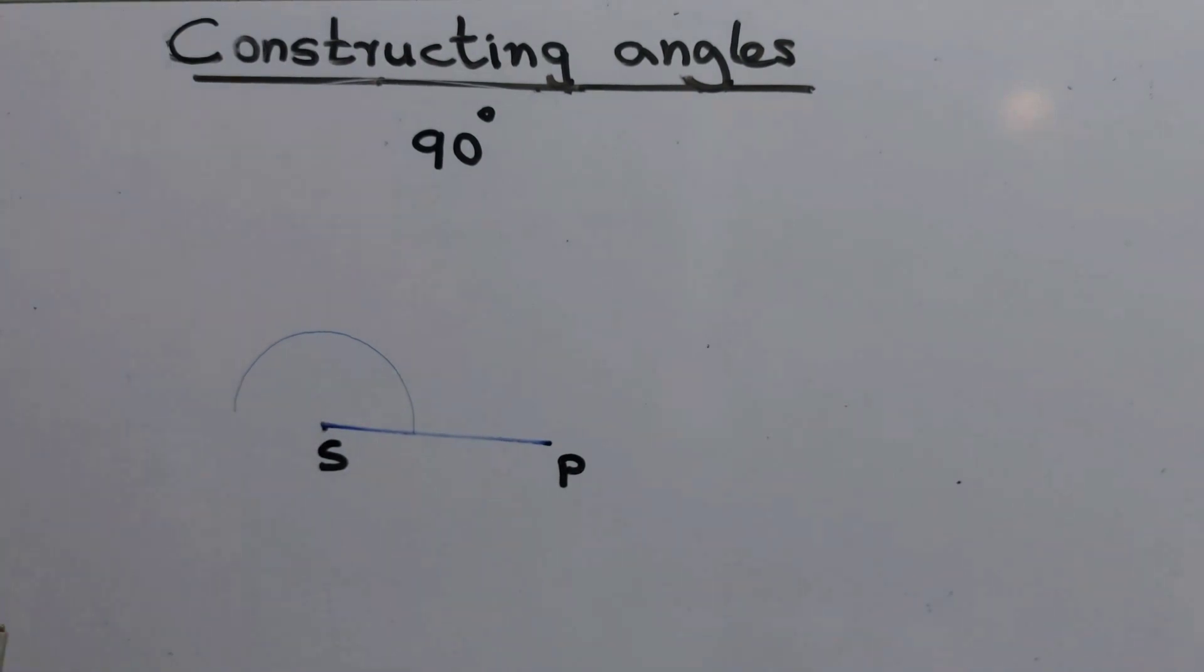When this arc meets the SP line, we'll name it as point R. Take the center of R, then draw another arc from there.